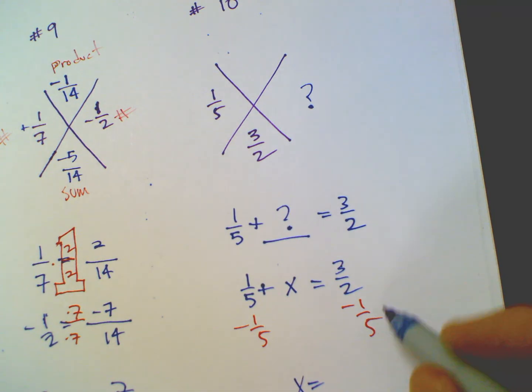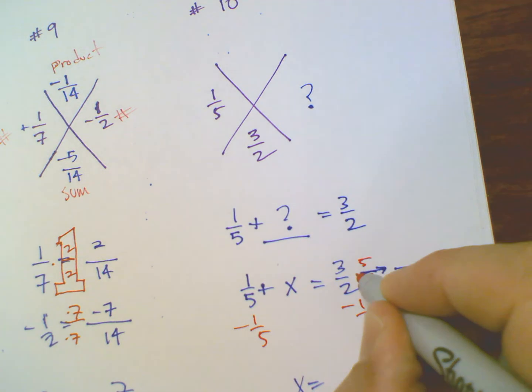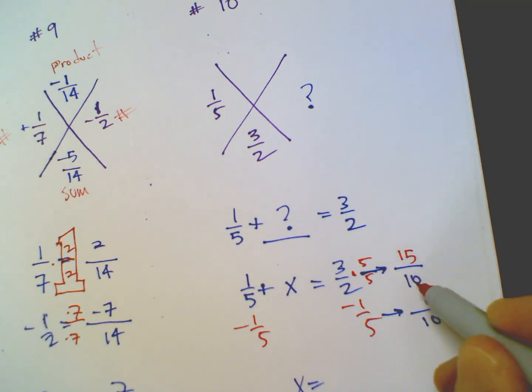So X is going to equal 3/2 minus 1/5. Well, again, here we have a situation where I need a common denominator. So I'm going to convert this to have a denominator of 10 and convert that to have a denominator of 10. Multiplying by the big giant 1 on both, 5 over 5 is what I would multiply this one by. So I'd get 15 over 10. And then I would multiply this one by 2 over 2 because 5 times 2 is 10. So that gives me negative 2 over here. So if I'm taking 15/10 minus 2/10, X would be 13/10.